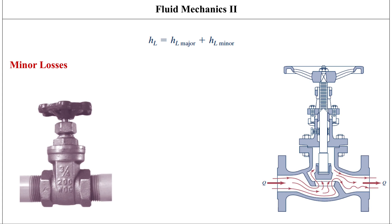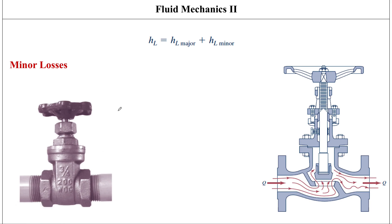These types of losses are very difficult to account for — there's no theoretical way to do it yet. All the head loss information for these components is based on experimental data in dimensionless form. One of the methods we use to determine minor losses — head losses or pressure drops — is to specify something called a loss coefficient, represented by KL.